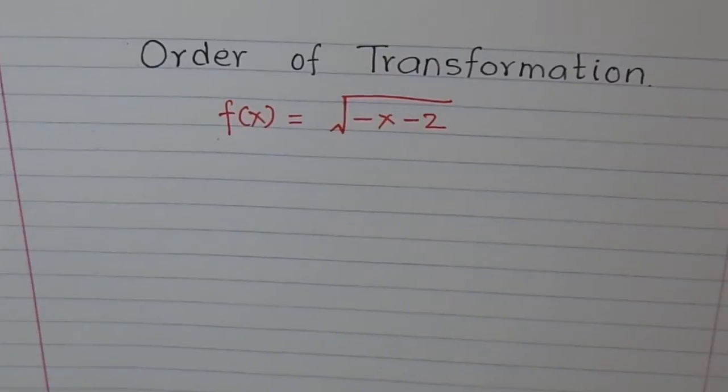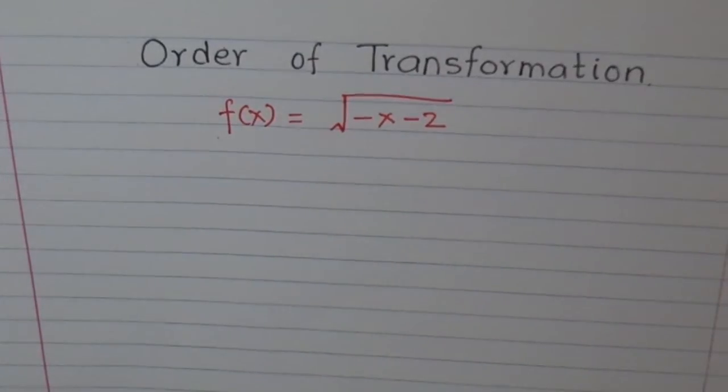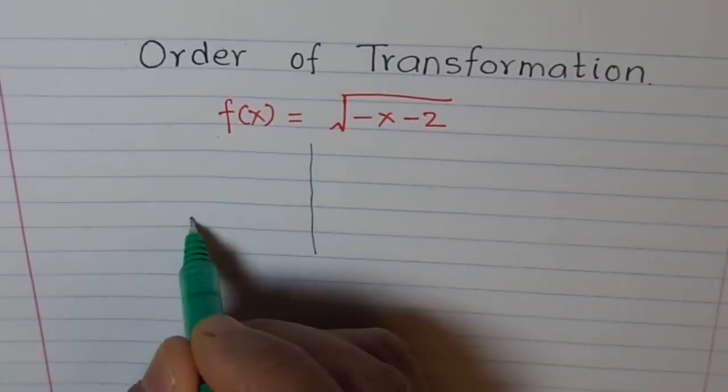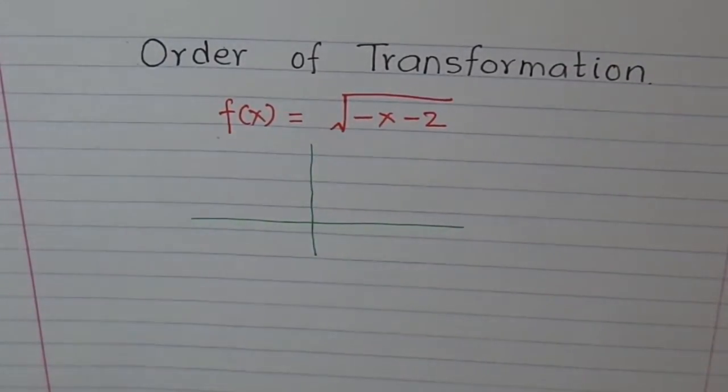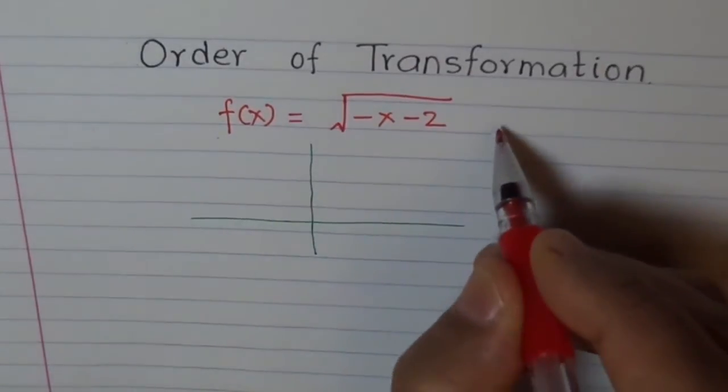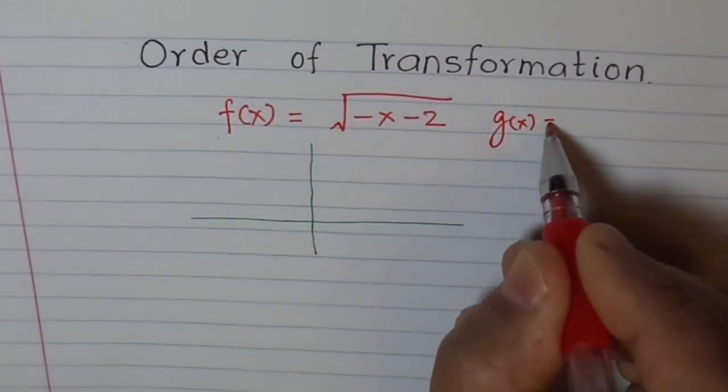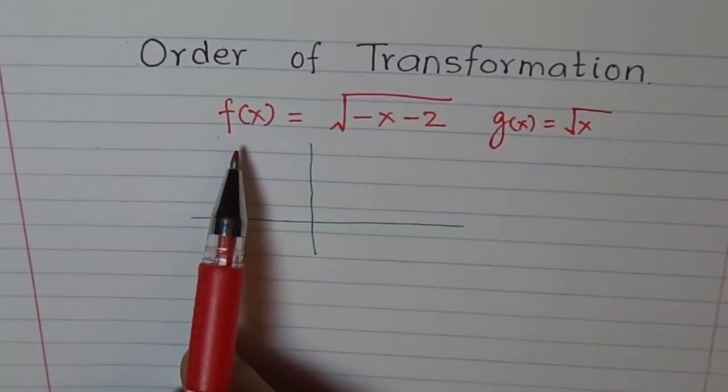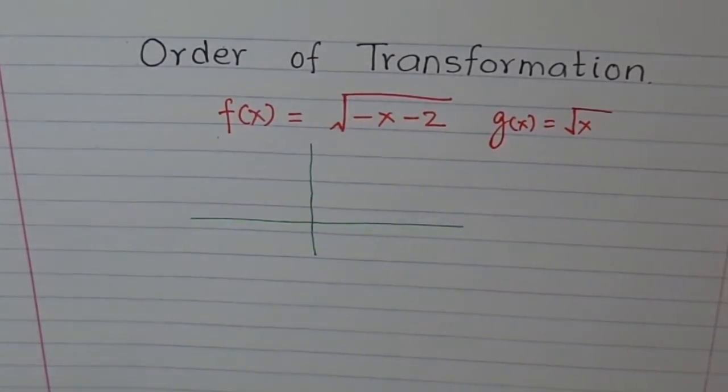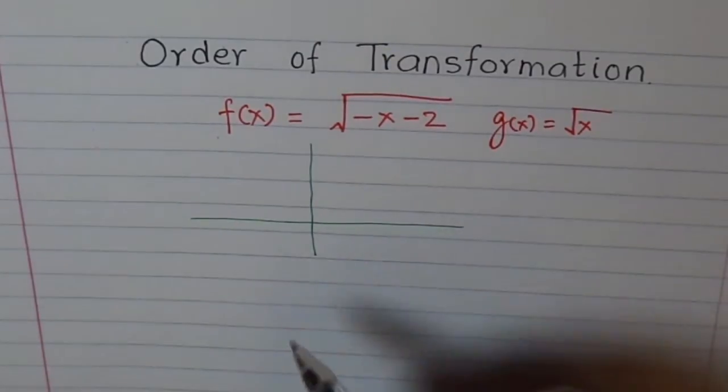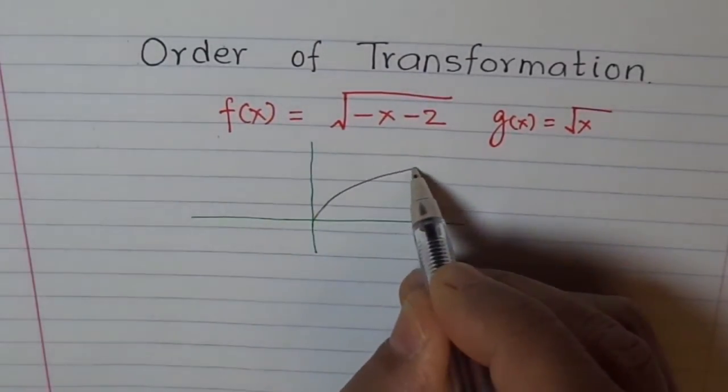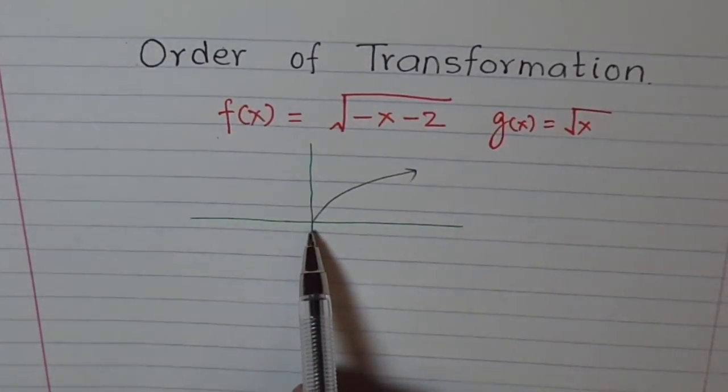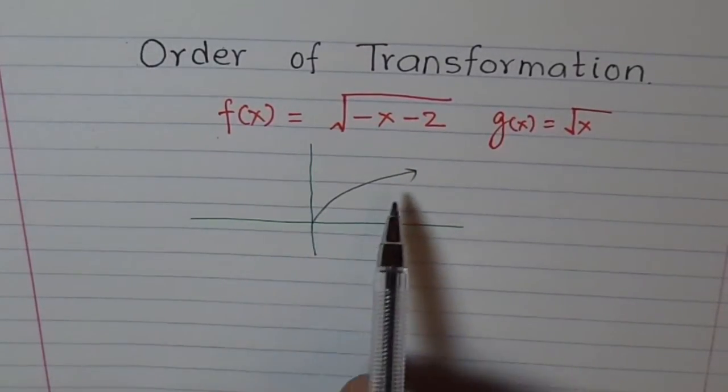I will show you the mistakes which people do first and then we will do the correct way. Let's see how to transform this function from the original function g(x) which is square root of x. Now, f(x) is a transformed function of g(x). What is square root of x? Square root of x is a function something like this, where x is greater than equal to 0 and it is in quadrant 1.